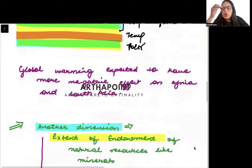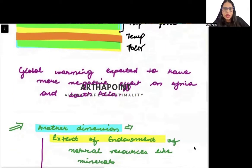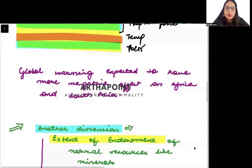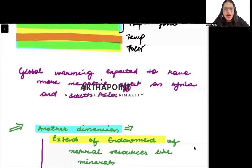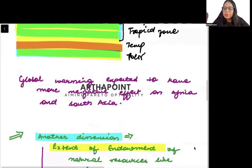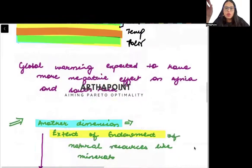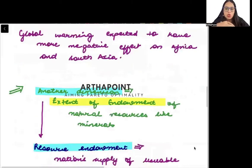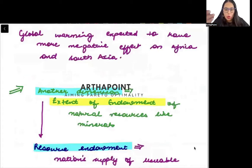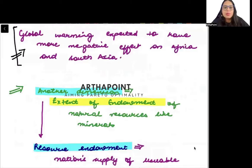When we talk about global warming — the extreme heat generated because of gases like carbon dioxide and other harmful gases — the worst effects of global warming will be felt in the tropical zone, and people in these regions will be affected more.